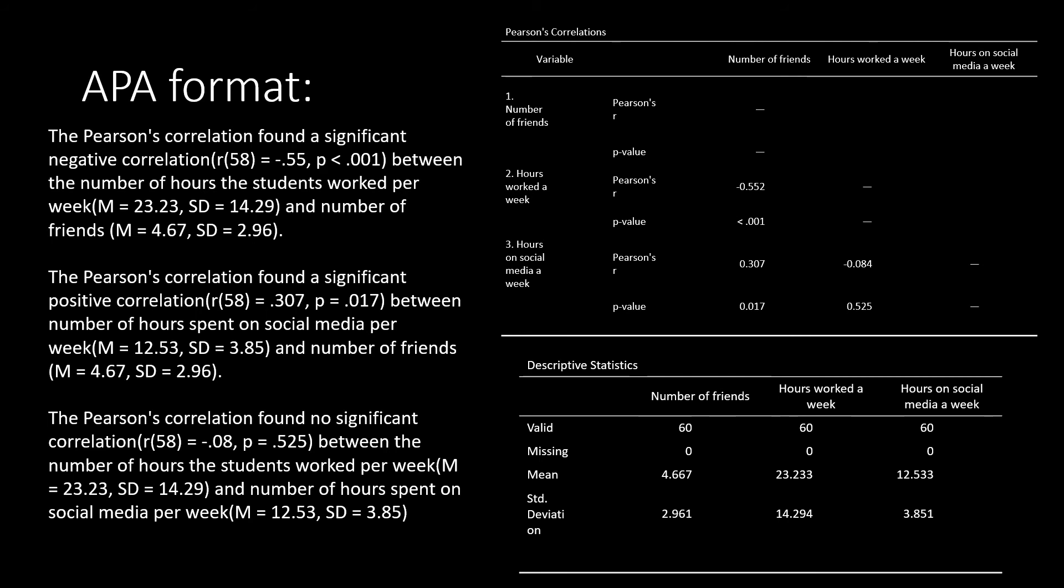Let's take a look at some APA format examples. Here we have an APA format example for each of the three correlations we previously ran. Before we get into the details of each of these examples, let's just talk more generally about APA format. As a reminder, when it comes to APA format, exactly how we write these sentences is kind of up to us, as long as we convey the appropriate information.